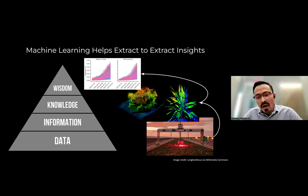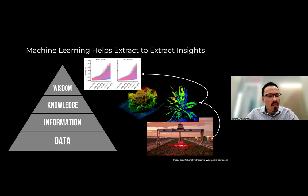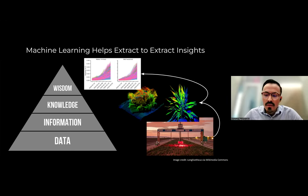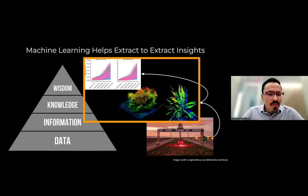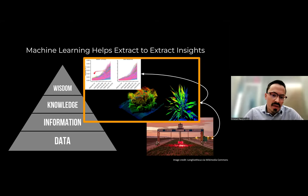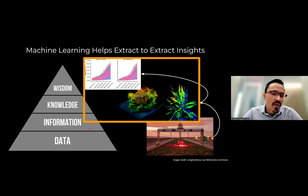Machine learning is quite helpful because it is able to extract information from data without being specifically told how to do so in programming languages. For the purposes of this session, we will be focusing on this particular step — the data to information phase: how do we take data and extract information from it, particularly using machine learning?